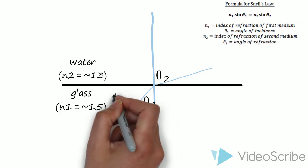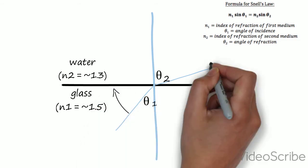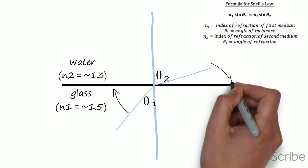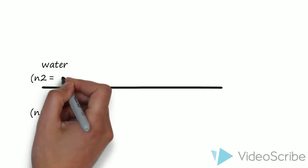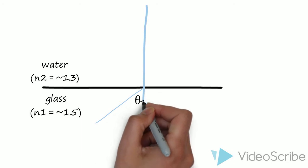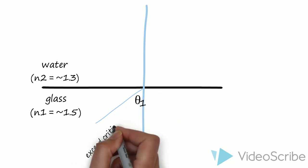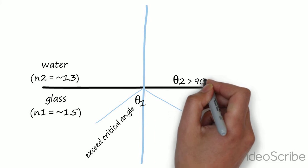As we increase the incident angle, we will eventually reach a point where the resulting angle of refraction is 90 degrees. We call this the critical angle, because once you exceed this angle, you can achieve total internal reflection, and the light will not enter the second medium.